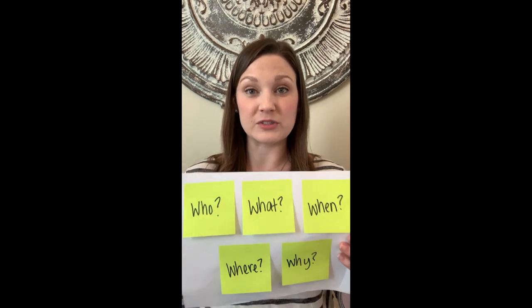Think about what we call the five W questions: who, what, when, where, and why. These questions will guide kids to think about what happens in the narrative text — that is, a text that is a story. Let's talk about these five W's.